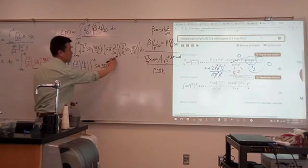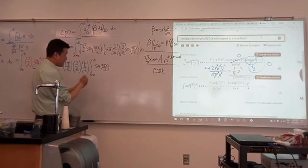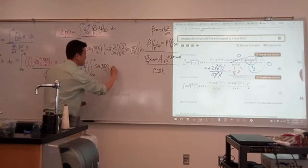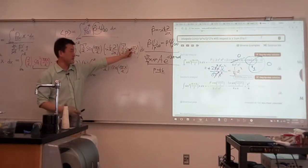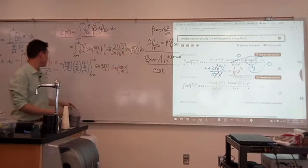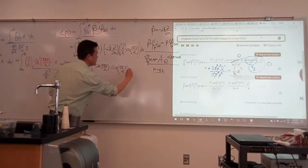So derivative of sine gives me cosine of n pi x over L. And the derivative of the inside gives me the factor n pi over L, which I put out here. And I guess I'm done, dx.